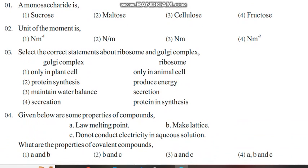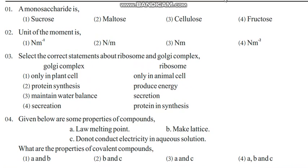First question: a monosaccharide is. Carbohydrates can be divided into three: monosaccharide, disaccharide, and polysaccharide. Mono refers to one, so that is the building unit of carbohydrates. You have three monosaccharides: glucose, fructose, and galactose. So here your answer is fructose. Sucrose and maltose are disaccharides; cellulose is a polysaccharide.